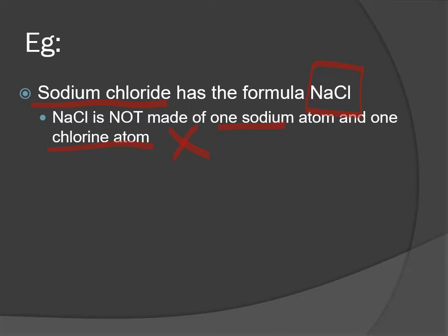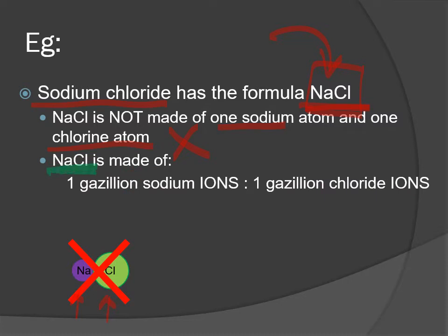Now, it is really, really important to understand that this is not saying that sodium chloride is made up of one sodium atom and one chlorine atom. That is incorrect. That's the common misunderstanding with ionic compounds. People think, 'Oh, sodium chloride, the formula is NaCl,' and so they think it must have one sodium and one chlorine atom. But that is incorrect. Instead, what you need to think about is that this formula is the lowest whole number ratio—it is a ratio of one sodium ion, not an atom, an ion, to one chloride ion.